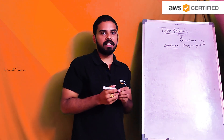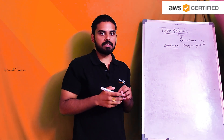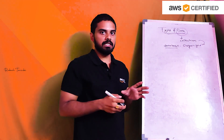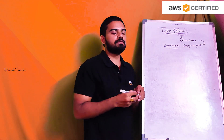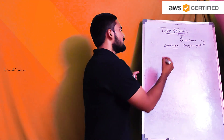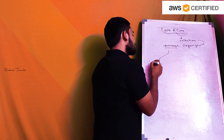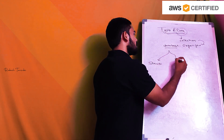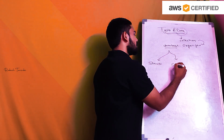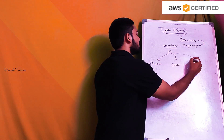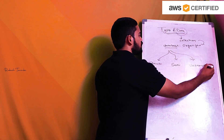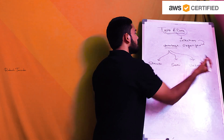In this organized collection, we will discuss the types of data. In total, we have three types of data: one type is structured data, the second one is semi-structured data, and the third one is unstructured data.